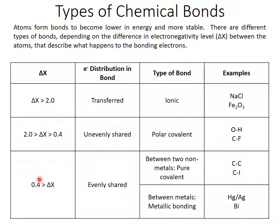Lastly, if your delta chi is really small — under 0.4 — then those electrons are going to be evenly shared. We've got nonpolar bonding. If that's between two nonmetals, that's a pure covalent bond, where two specific atoms are evenly sharing one particular pair of electrons.